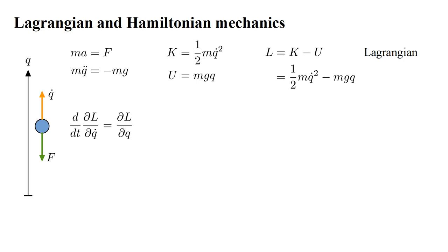Lagrangian mechanics does not introduce any new physics. It is simply an alternate mathematical formulation of Newtonian mechanics. Our example problem is so simple that Lagrangian mechanics is redundant; we can simply form and solve the Newtonian equations directly. However, in more complicated problems, especially those with many variables and complex geometries, it can be very difficult to develop and solve the Newtonian equations. But very often it is much simpler to write the expressions for the kinetic and potential energies, form the Lagrangian, and evaluate and solve the Euler-Lagrange equations.